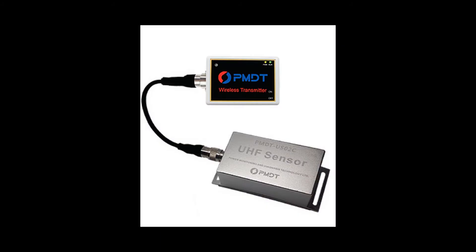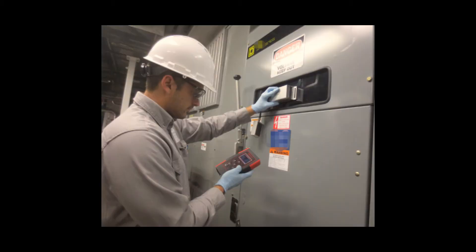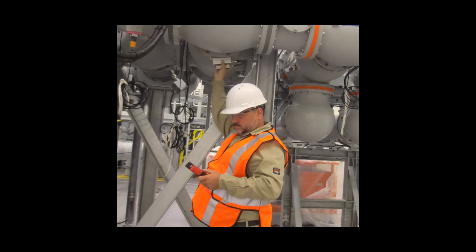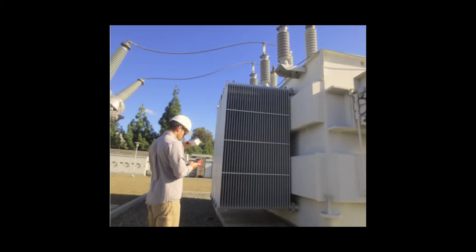The UHF detection method is utilized to detect the ultra high frequency electromagnetic wave signals produced in the electrical equipment. The UHF sensor acts as a special antenna with a response range from 300 megahertz to 1.5 gigahertz. The majority of PD signals have an emission within this range, making this the most versatile sensor. Since the bandwidth of on-site corona disturbance signals are mainly below 300 megahertz, the UHF detection method is effective in avoiding corona disturbances. Its high sensitivity can help determine the PD type as well as its location.